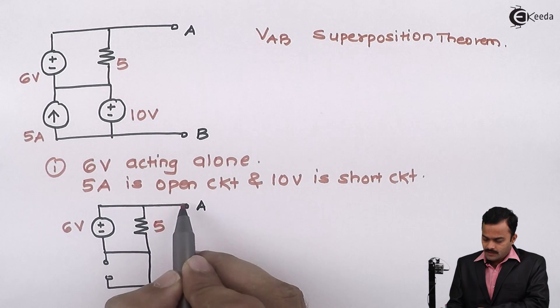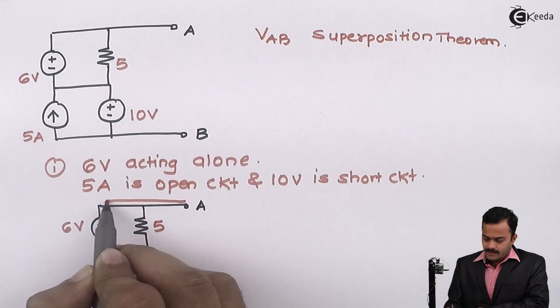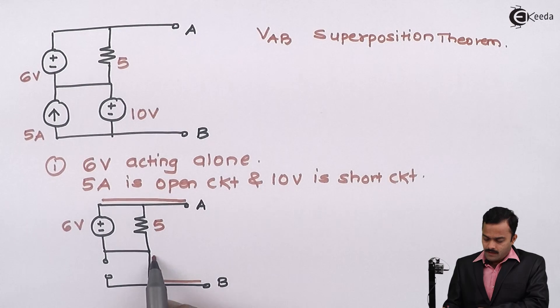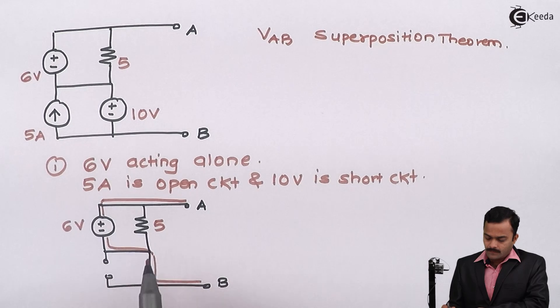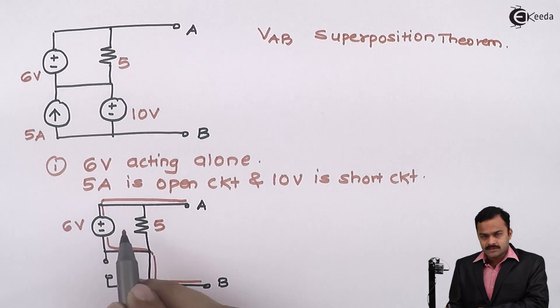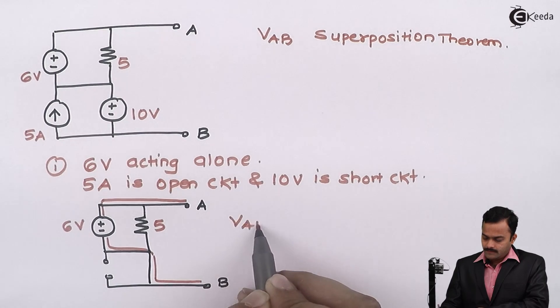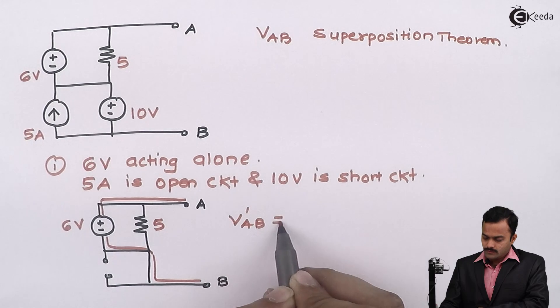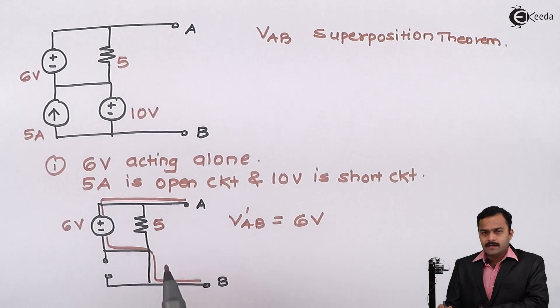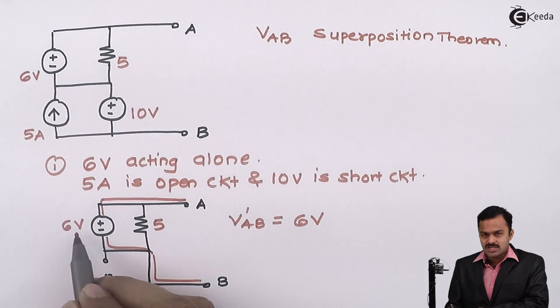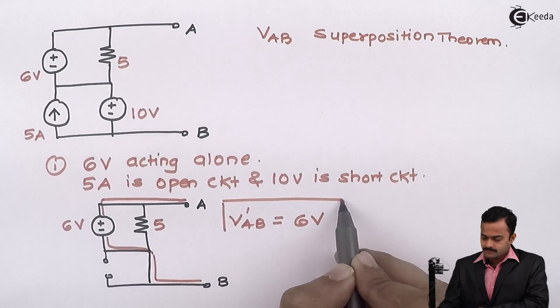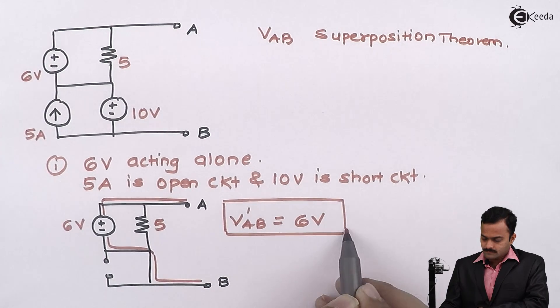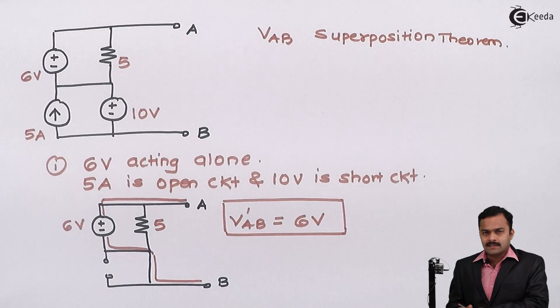If you see properly, from this point A to point B, I am having a voltage source connected which is 6V, and 5 ohms is across this 6V. So I can say directly VAB equals 6V. And VAB is a partial answer because I have considered only one source, so I will consider VAB as a notation. So this will be your answer directly.